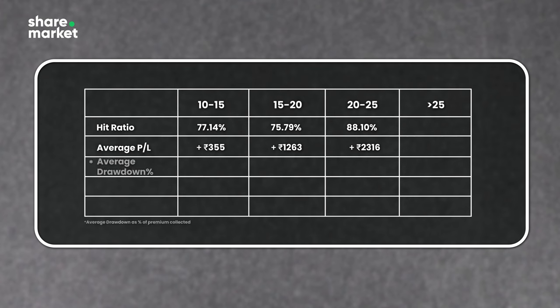Another metric to look at is average drawdown. When entering a short strangle, you lock in the premium you receive — that premium accrues to you provided you hold on till expiry. From entry till expiry, in a low vol environment the drawdown goes up to 160% for the 10-15 bucket, 135% for the 15-20 bucket, and only 92% for the 20-25 bucket. If people can ride through the average drawdown period and go till expiry, they will realize the average P&L.